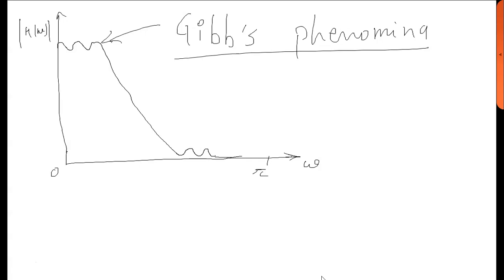On one hand, we are required to truncate a sample so that we will have a finite number of samples. And on the other hand, we need to avoid these oscillations. Therefore, what we do is that we multiply our response in the time domain with another function which is known as a windowing function. We will see the Hamming window.